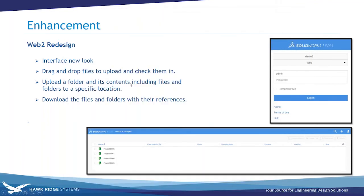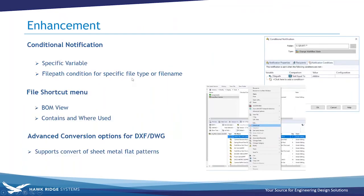More enhancements: conditional notifications, file shortcut menu, and advanced conversion options for DXF/DWG. With conditional notifications, before 2019 you were a bit stuck — the choices for sending notifications or tailoring them to a certain user or file type were limited.